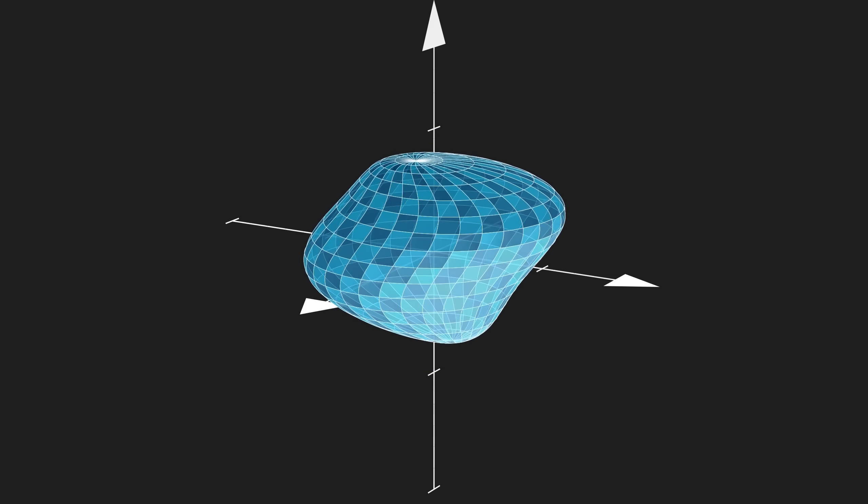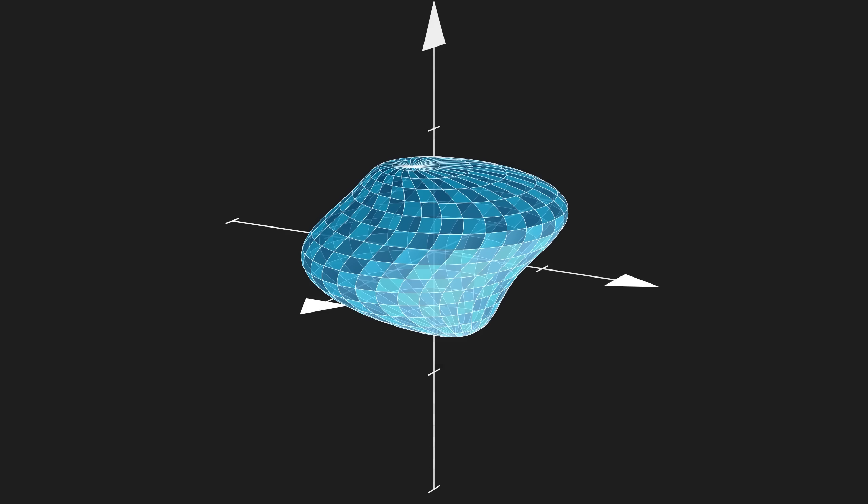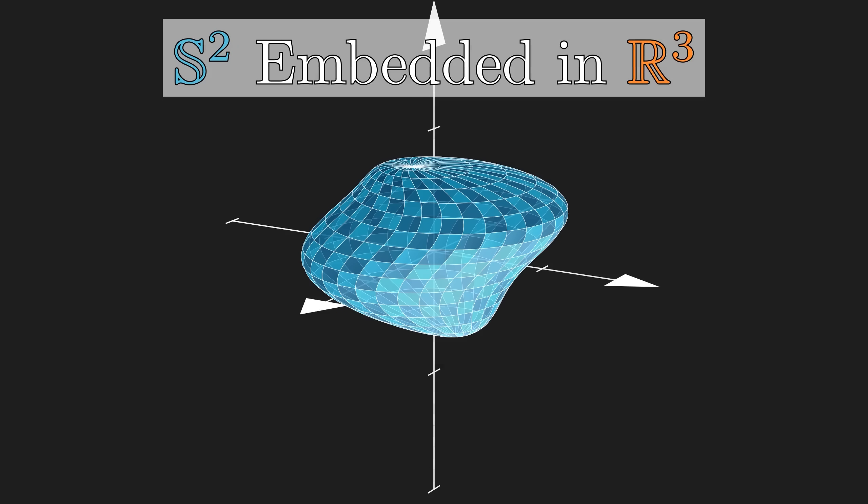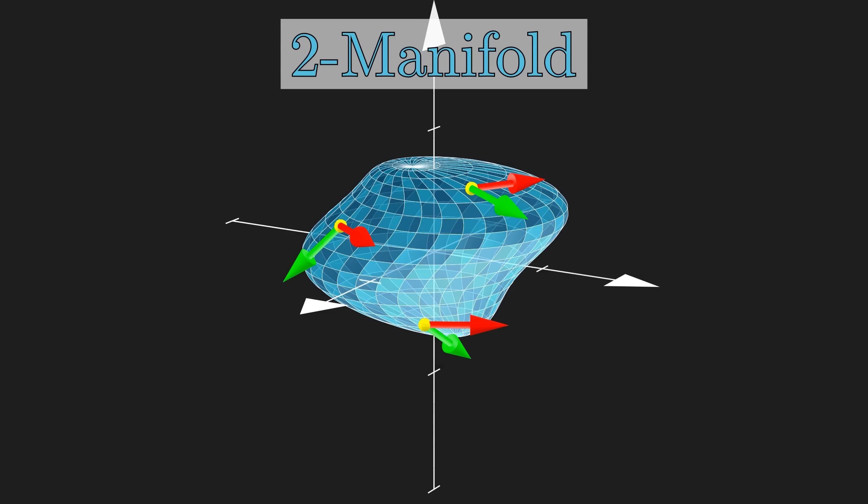Let's start off with some topology, where we don't actually care about rigid quantities like distance, angle, or curvature. This deformed sphere sits nicely in usual 3D space, and we call this an embedding. Now, choose any point on the sphere, you are allowed to walk in two independent directions. And this holds for every point on the sphere, so we call it a two-dimensional manifold, or simply a two-manifold.